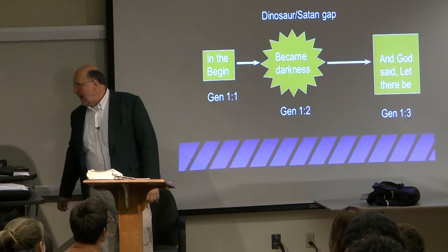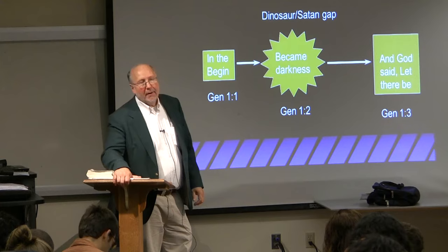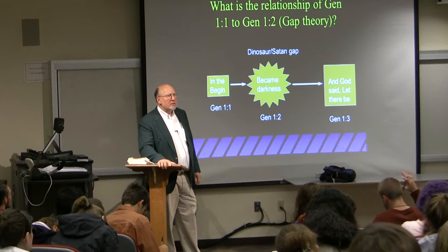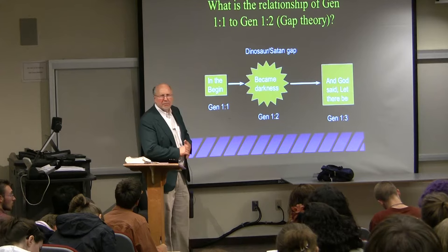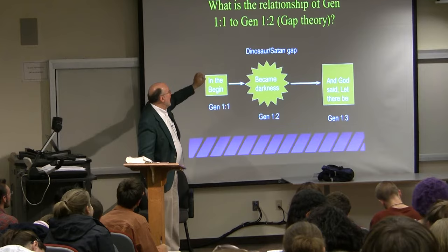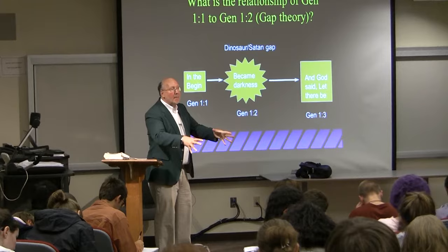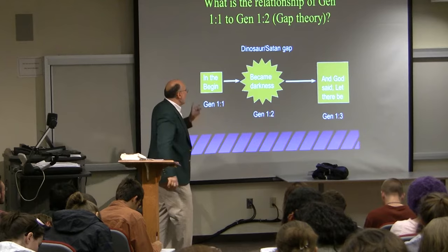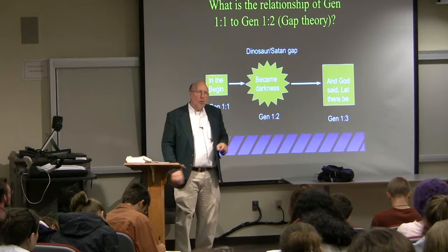The first view is called the Gap Theory. It was held by — has anybody ever heard of the Schofield Reference Bible? Schofield Reference Bible, Philadelphia College of the Bible, now Philadelphia Biblical University, held this view. This is how the Gap Theory reads Genesis 1:1: 'In the beginning God created the heavens and the earth' — there was an initial wham-bam, God created all this stuff. The earth then became darkness and void, formless and empty. When God originally made things, did he make them good, and light? But here it became darkness, formless and empty.